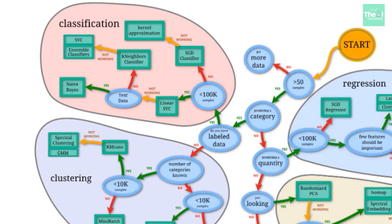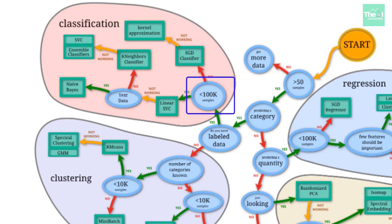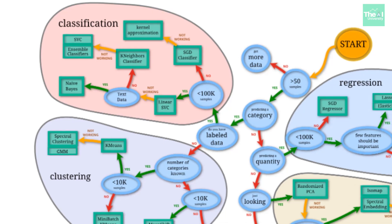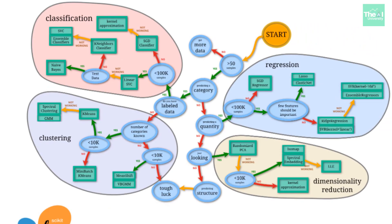If KNN doesn't give the right results or accuracy, we should try building a model using either SVC (support vector classifier) or an ensemble classifier. Coming back to sample size — if the number of samples are greater than 100,000, we should pick SGD (stochastic gradient descent) classifier. If that doesn't give the right result, we opt for the kernel approximation classifier. This covers the classification family of algorithms.